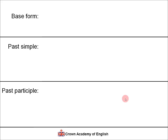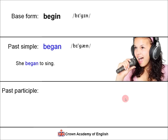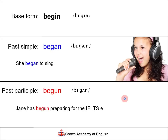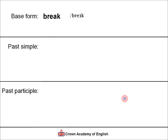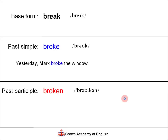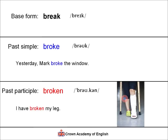The first verb is 'begin'. The past simple is 'began'. Example: 'She began to sing.' The past participle is 'begun'. Example: 'Jane has begun preparing for the IELTS exam.' The verb 'break'. The past simple is 'broke'. Example: 'Yesterday, Mark broke the window.' The past participle is 'broken'. Example: 'I have broken my leg'.